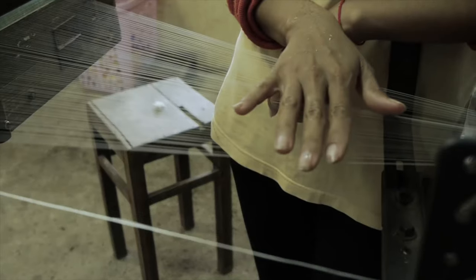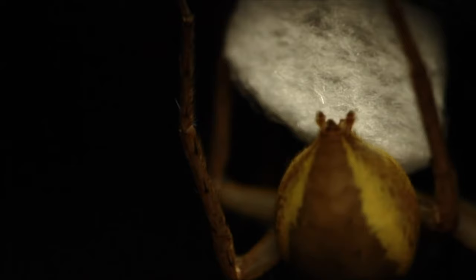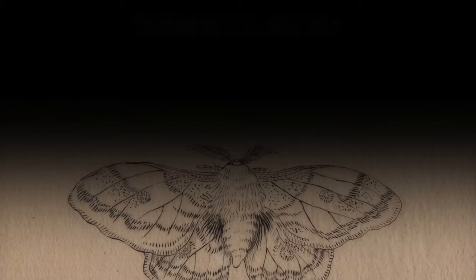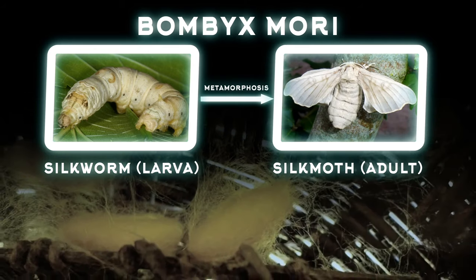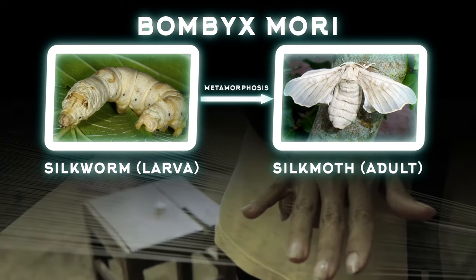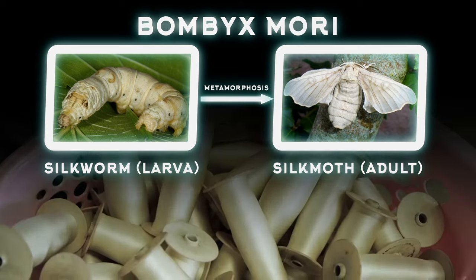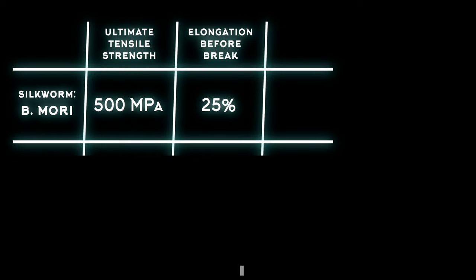Silk is a protein fiber spun by many insects and arachnids. Silk from the silkworm Bombyx mori is farmed around the world and commonly woven into textiles. Silkworm silk has impressive mechanical properties, with an ultimate tensile strength of over 500 megapascals,